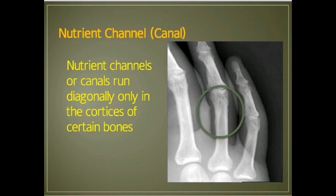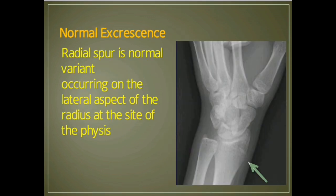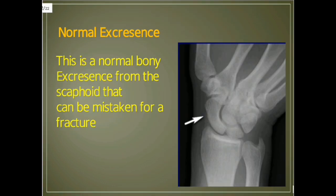Another example is the nutrient channel or canals, which run diagonally only in the cortices of certain bones. Normal bone exostoses: a radial spur is a normal variant occurring on the lateral aspect of the radius. There is also a normal bone exostosis from the scaphoid that can be mistaken for a fracture.